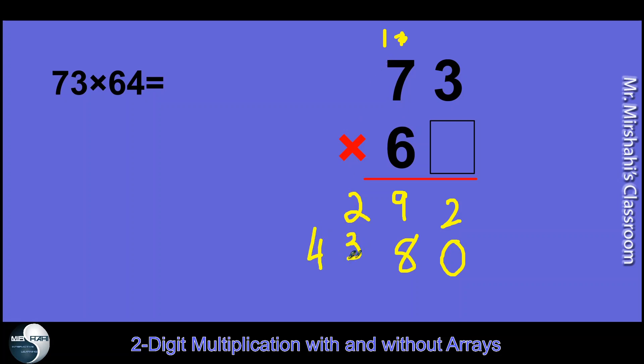Make sure everything is lined up properly. That's really important. Ones, tens, hundreds, and thousands. So we add it all up. 2, 17, carry the 1, 6. And the answer is 4,672. All right.